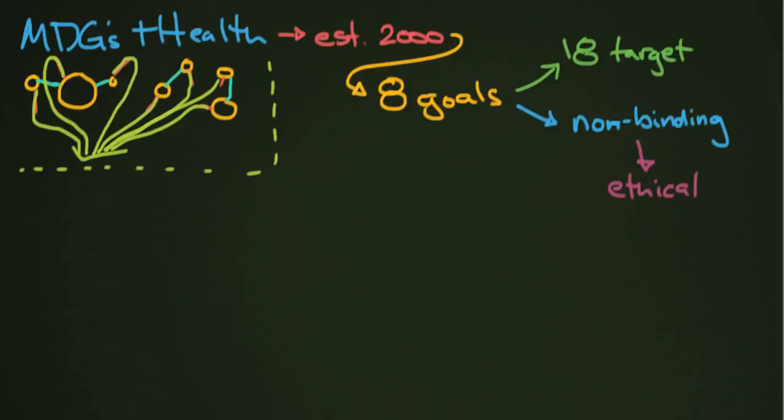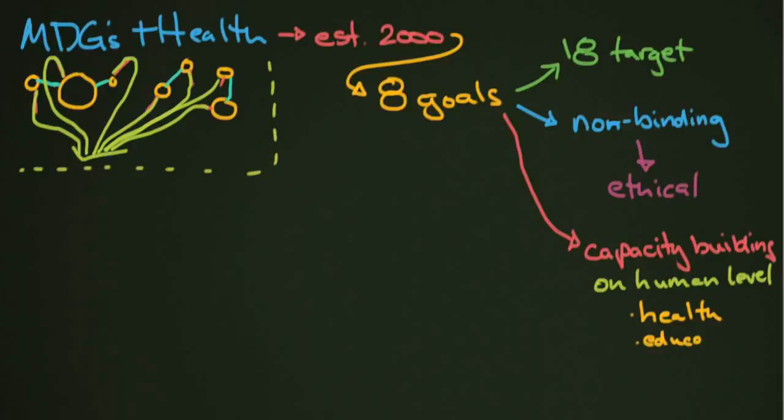The big thing that is really different about these goals than things before it, is that they really emphasize capacity building on the human level. So we're thinking now about health, for example. Health is a really important one. And we're thinking about education. And we're also thinking about incomes. So they wanted to find ways to create an environment in which people in the developing world can build their own future and build their own luck in a way and make a better go at it in a world that at the time and still is changing every day.